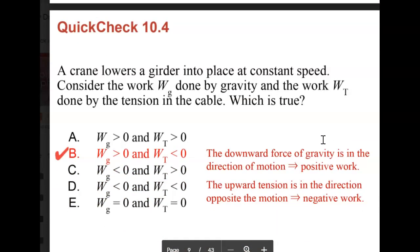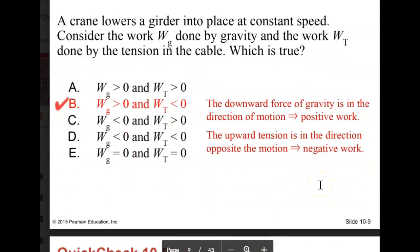That means that this is our correct answer. The downward force of gravity is in the same direction of motion or displacement, so the work done by gravity is positive. The upward tension is in the direction opposite the motion, so the work done is negative.